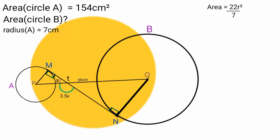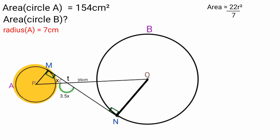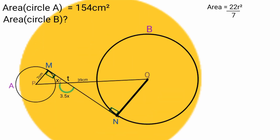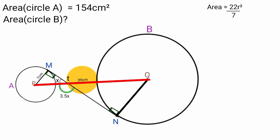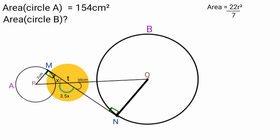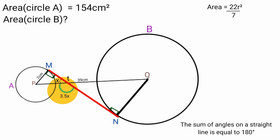These two angles here are right angles. Recall we found the radius of circle A to be 7 centimeters, so this line here is 7 centimeters in length. This is a right angle triangle and we have the length of line PQ as 39 centimeters. Now, this angle and this angle are equal because they are opposite angles formed by the intersection of two straight lines, so this angle is also X. This angle and this angle lie on the same straight line, and the sum of angles on a straight line is 180 degrees, so we can form the equation X plus 3.5X equals 180 degrees.